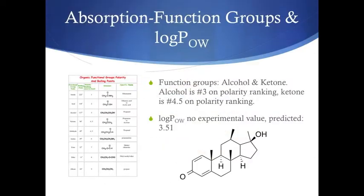Dianabol has a cyclic ring structure. The two functional groups present in the molecule are an alcohol group and a ketone group. The alcohol group is number 3 on the polarity ranking, while the ketone group is number 4.5 on the polarity ranking list. Since both functional groups are relatively polar, they will provide some resistance to simple transcellular diffusion.